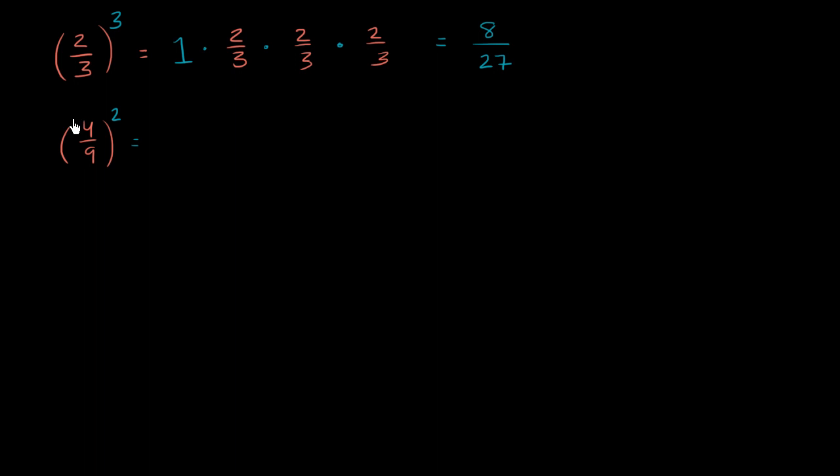Well, once again, you could view this as taking 2 4 ninths and multiplying them. Or you could view this as starting with a 1 and multiplying it by 4 ninths two times. Either way, your numerator is going to be 4 times 4, which is 16, and your denominator is going to be 9 times 9, which is equal to 81.